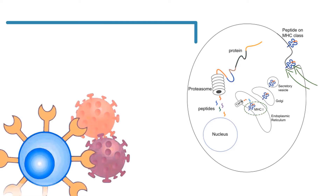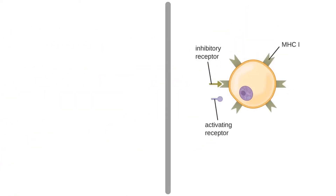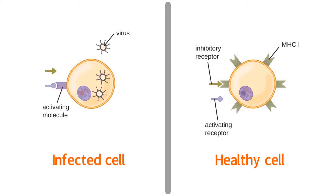However, if a viral infection has occurred, the antigen is a viral antigen. Additionally, some cells are able to present viral antigen on MHC2, which will be discussed later in this video. The immune system is able to distinguish between a healthy cell and a virally infected cell because of the antigens the cells present.